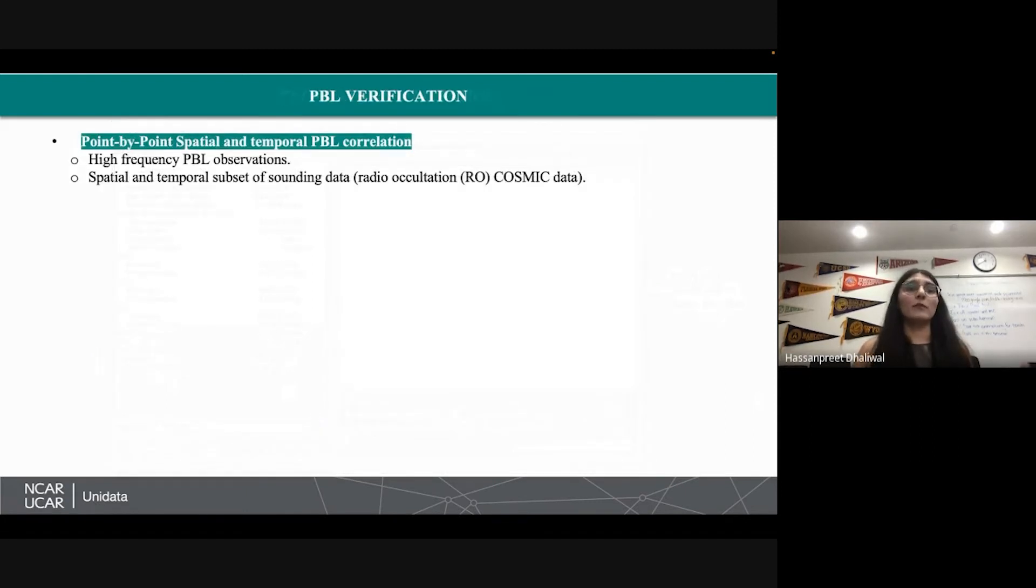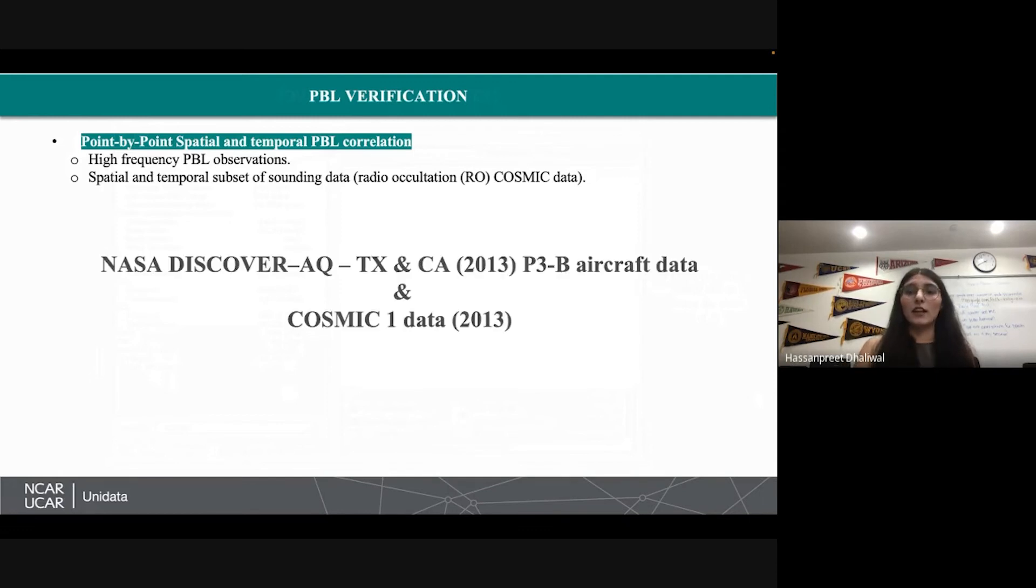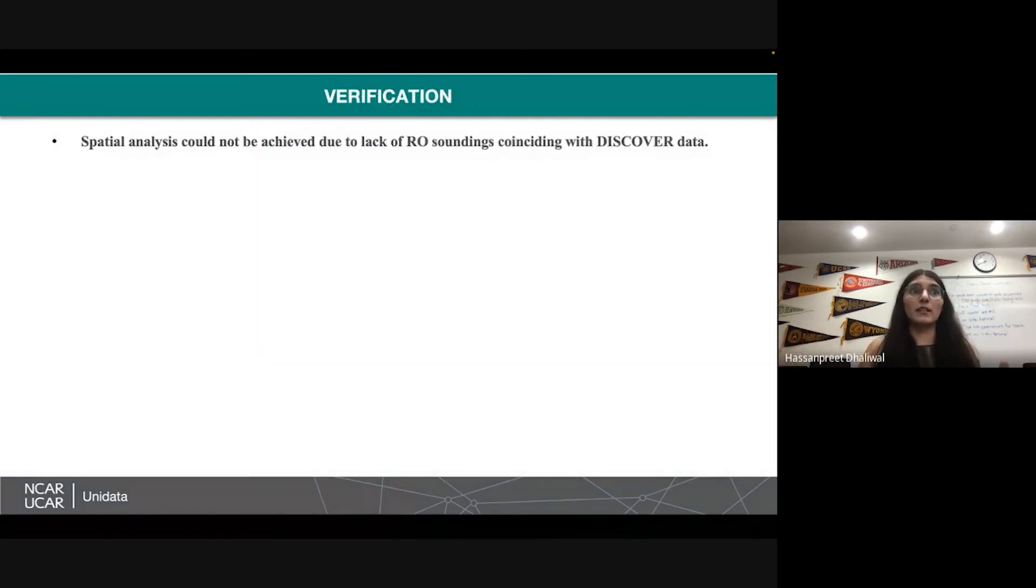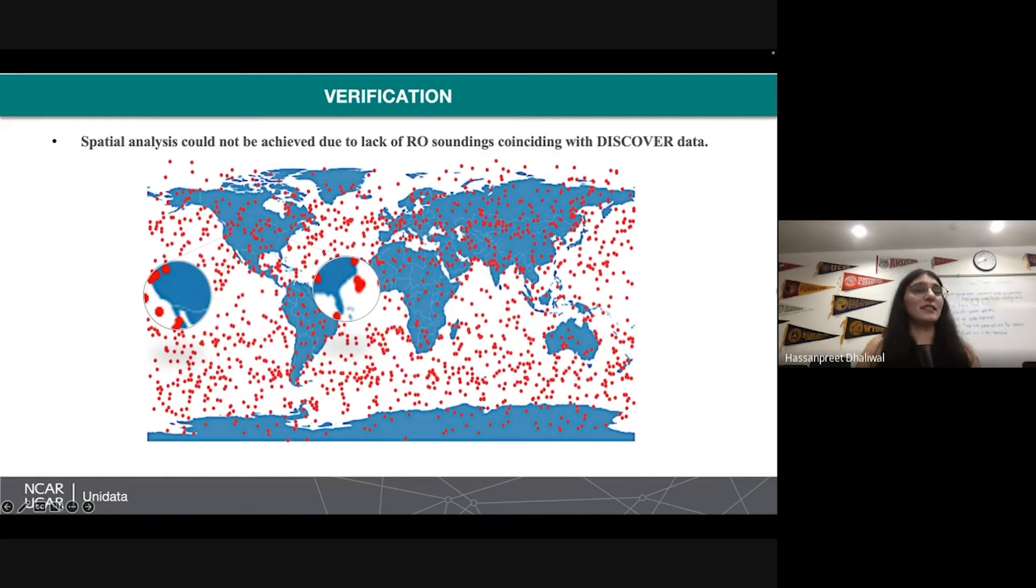Next, I wanted to verify a point by point spatial and temporal correlation. For that, I needed high frequency observation and a subset of the radio occultation cosmic data. So I chose these two data frames, the NASA discover thing which happened in 2013 and the cosmic one data. For verification, unfortunately, much to my dismay, we could not do a proper spatial analysis of that because there was a lot of trouble in actually finding a proper subset of cosmic data because the UCAR archive does not allow that. But I did find one from Jet Propulsion Laboratory. They had used it for one of the projects and used supercomputers to properly make a subset of that. But we found out, as you can see in this world map, that there is no proper observations on the coast where the field projects happened. So we could not really have a proper correlation because there was no overlapping observations. This is where the observations didn't happen.